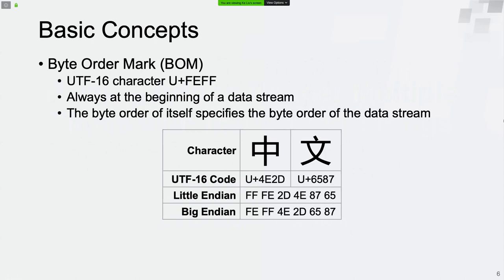The byte order mark is the UTF-16 character FEFF. The byte order of itself specifies the byte order of the data stream and will always be at the beginning of a data stream. There are two characters with values 0x4E2D and 0x6587. In little-endian format, the data stream will be FFFE2D4E8765. In big-endian format, the data stream will be FFFE4E2D6587.